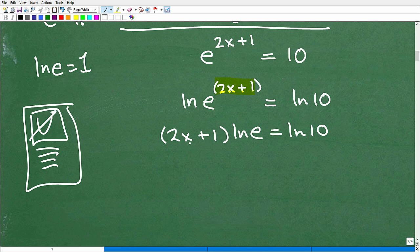all right? This is a 2x plus 1 times 1. So, really, what we have over here is this 2x plus 1 equals ln 10. Now, again, I can go into my calculator and go ln 10, and a decimal will pop out.